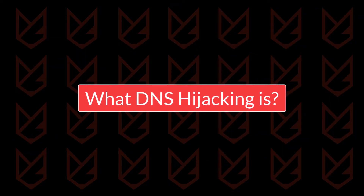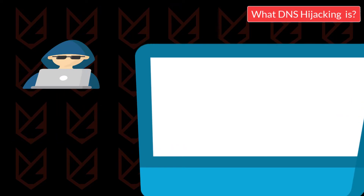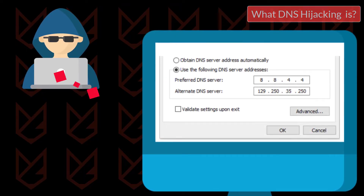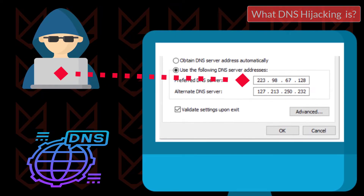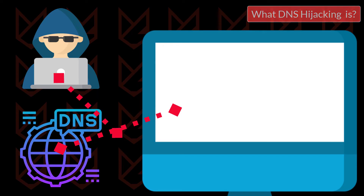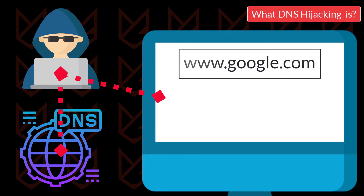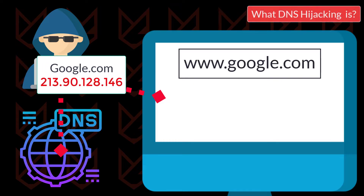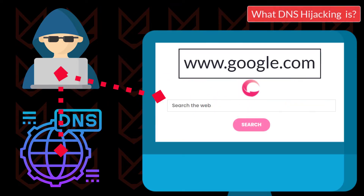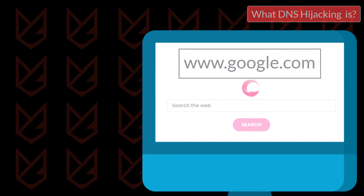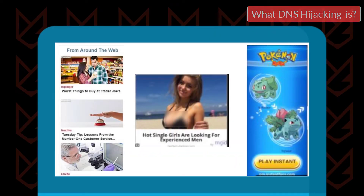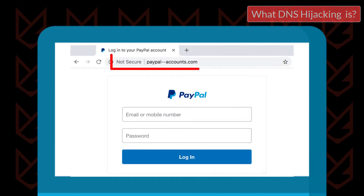Now let's understand what DNS hijacking is. Cyber criminals hack the DNS either by changing the DNS server address or intercepting the communication between your device and the DNS server. After hacking, they replace the actual server IP address with their own site. If you try to open google.com, you will be redirected to the hacker's page. Hackers could use DNS hijacking or redirection attacks to display advertisements or phishing websites to steal your confidential information.